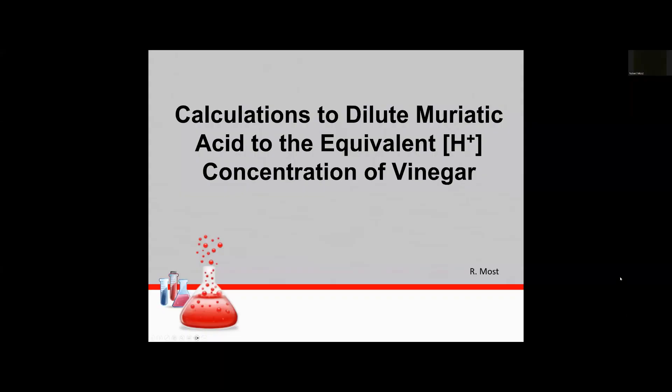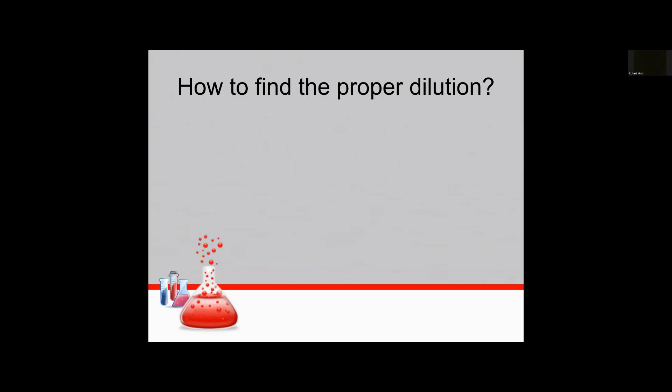So the purpose of this video is to show you how to calculate and dilute muriatic acid to the equivalent hydrogen ion concentration of common vinegar.